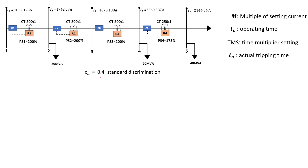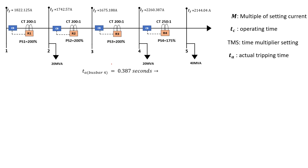From that 0.4 seconds we calculated the TMS of relay 4 for a fault on bus bar 4, which gave a value of 0.092. From there we calculated the TA for bus bar 4, which was 0.387 seconds. Now we move on to relay number 3. For relay number 3, the first thing to do is calculate for a fault on bus bar 4.